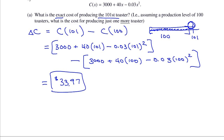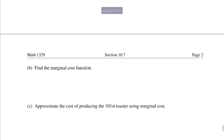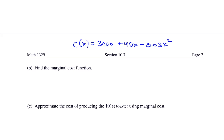Question B: find the marginal cost function. The cost function was 3000 plus 40x minus 0.03x squared. To find marginal cost, take the derivative. The derivative of 3000 is 0, the derivative of 40x is 40, and the derivative of negative 0.03x squared is negative 0.06x. So the marginal cost function C prime of x equals 40 minus 0.06x.